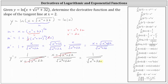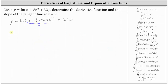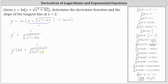Let's go ahead and record this result, and then we'll determine the slope of the tangent line at x equals 2. To determine the slope of the tangent line at x equals 2, we need to evaluate the derivative function at x equals 2, which is 1 divided by the square root of the quantity 2 squared plus 32. 2 squared is 4, 4 plus 32 is 36, giving us 1 divided by the square root of 36. The square root of 36 is 6, so y prime of 2 equals 1/6, which indicates the slope of the tangent line at x equals 2 is m equals 1/6.